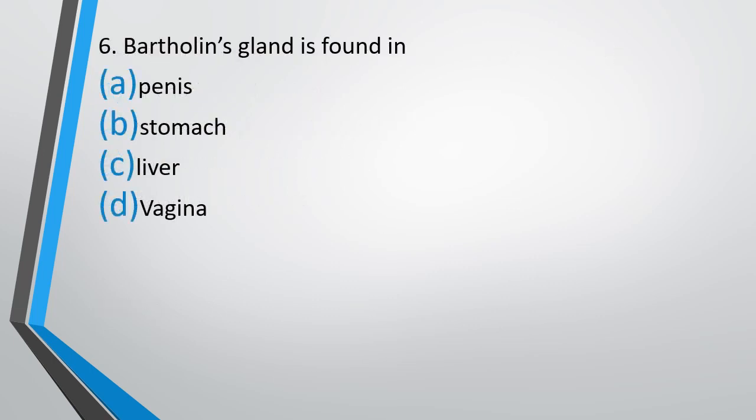Question number 6. Bartholin's gland is found in penis, stomach, liver, or vagina. The correct answer is option D, in vagina.